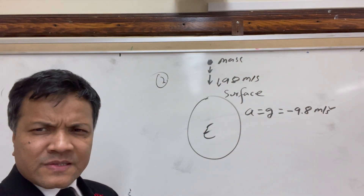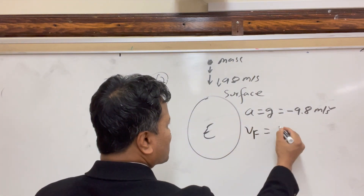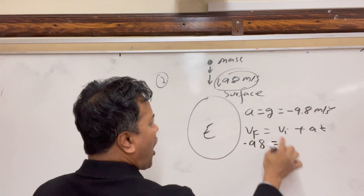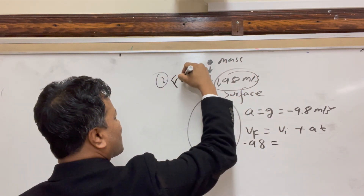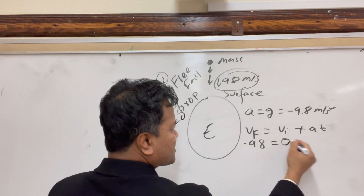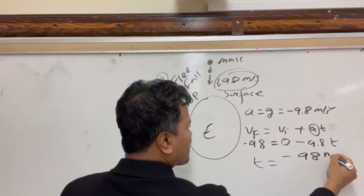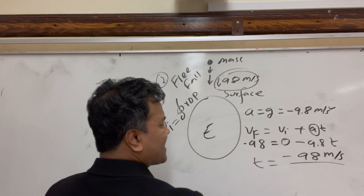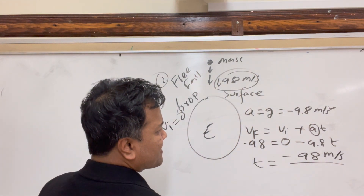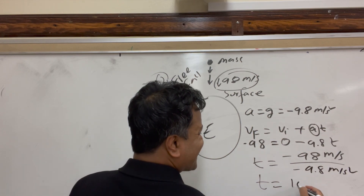We want to find how long it takes. Using VF = VI + AT: VF is 98 downward so negative, VI is zero since it's dropped from rest. So negative 98 equals negative 9.8 times T, giving T equals 10 seconds.